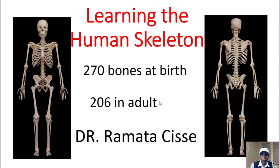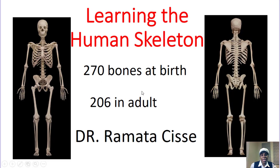At birth we have 270 bones; many of them fuse to shrink the number down to 206. Look at the two views of the human skeletal system — the anterior and the posterior view. I'll teach you the bones of the skull, the cephalic region divided into facial and cranial, then the trunk, then the upper and lower limb, with acronyms that will make it easy for you to memorize.